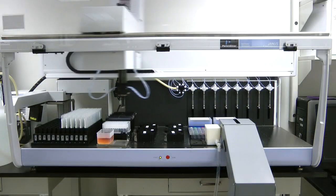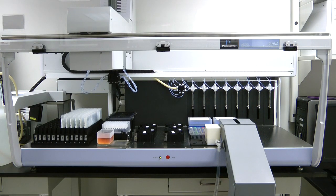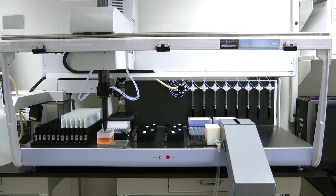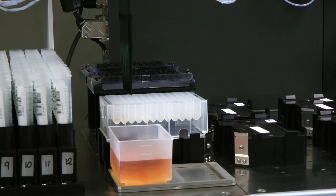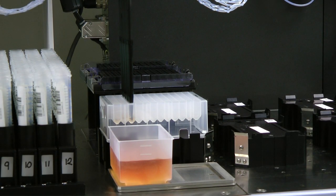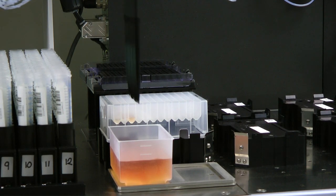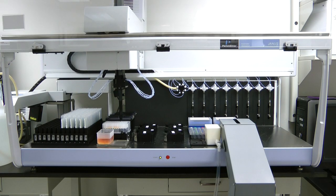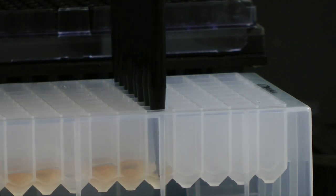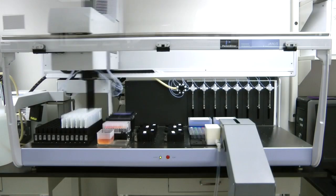The pipetting arm picks up pipet tips and proceeds to aspirate and dispense various volumes of AIM-5 into the deep well plate, eight wells at a time. Each position in the deep well plate corresponds directly to a sample position in a rack. After the required amounts of AIM-5 are dispensed, the Janus proceeds to mix, aspirate,